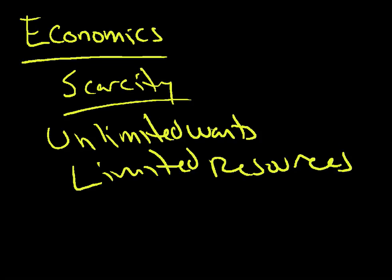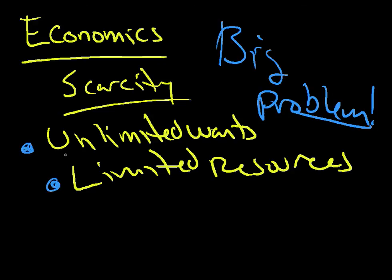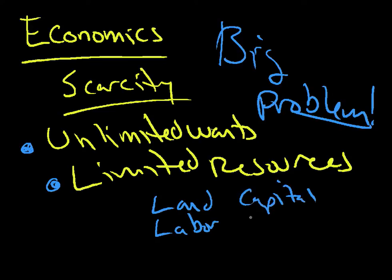All economics is based on this basic principle — this basic problem that human beings face. I call it the big problem. When you're plowing through all of these models in macro and microeconomics, the debate is really about how do we face this problem of unlimited wants — all the things we want in the world as human beings — faced with limited resources: a limited amount of land, a limited amount of labor, a limited amount of capital, a limited amount of entrepreneurial ability.